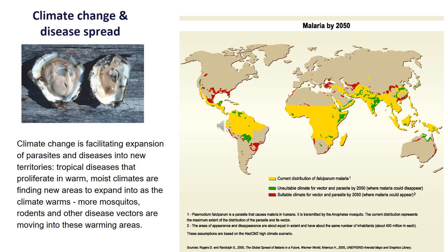What about diseases and climate change? Climate change is helping the expansion of lots of parasites and diseases, because areas that usually had a colder season where parasites like ticks, mosquitoes, and fleas would die off during the frozen cold season are now getting warmer and don't have a dormant season as much anymore. So these tropical diseases proliferate in warm moist climates and are finding new areas to expand into.